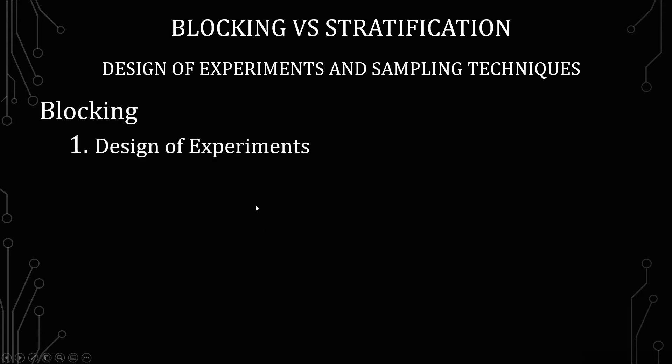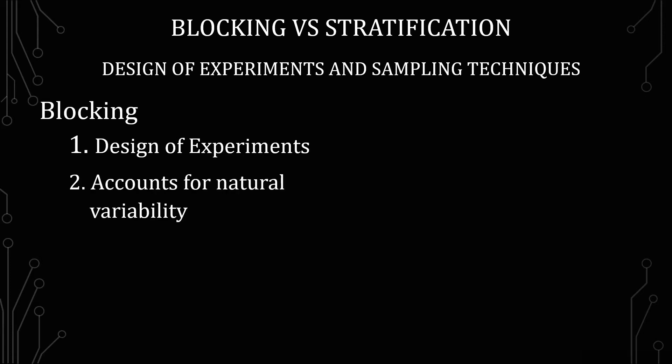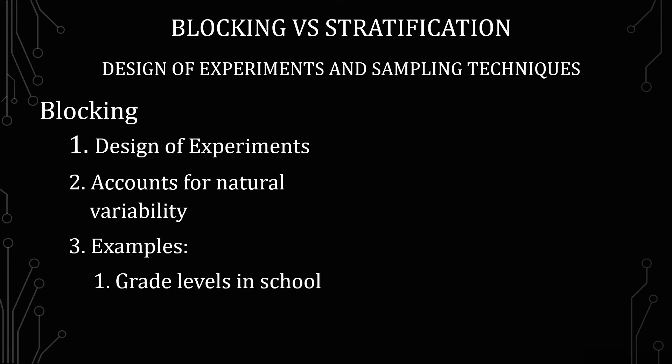The first one we're going to go into is blocking, and that's actually from the perspective of designing experiments. The point of blocking is to account for natural variability. One example is looking at grade levels in schools. Say you want to do an experiment where you're asking a survey in a middle school, and you might expect 6th, 7th, and 8th graders to answer differently.